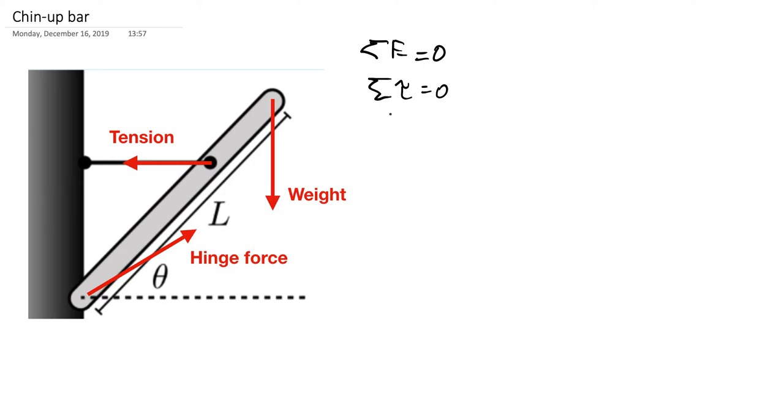In this case, I'm going to focus on the sum of the torques equal to zero because I can pick a moment arm origin down here, and then the torque from the hinge force will be zero because the moment arm is zero.